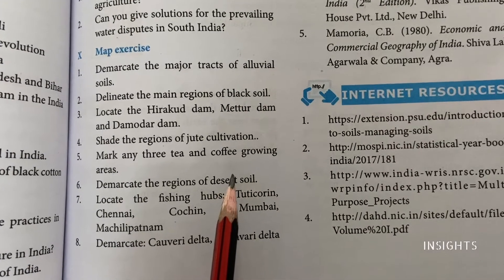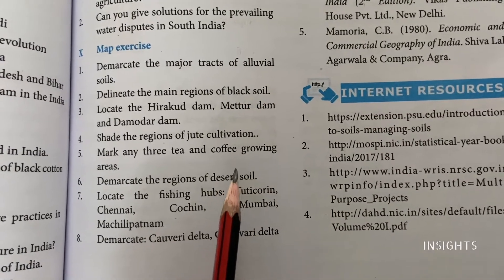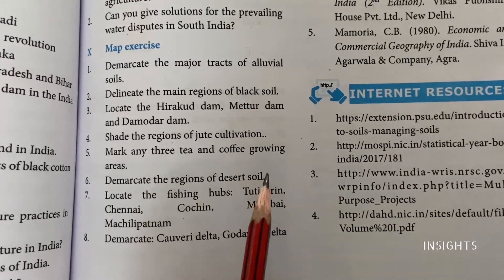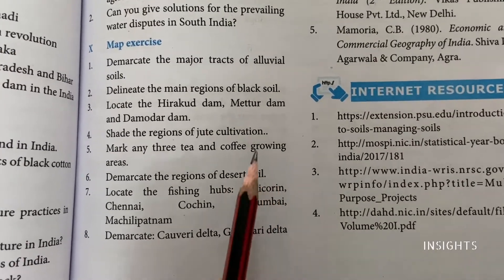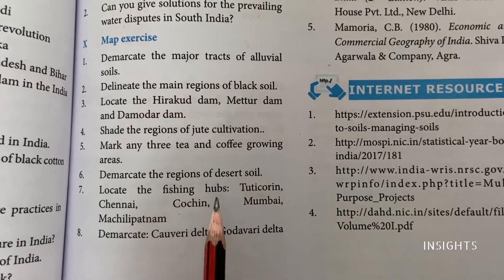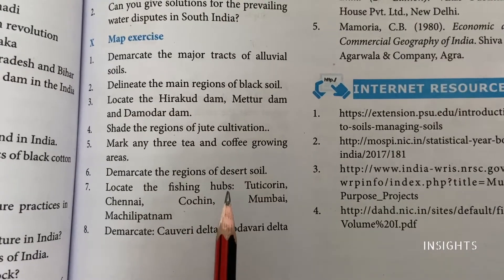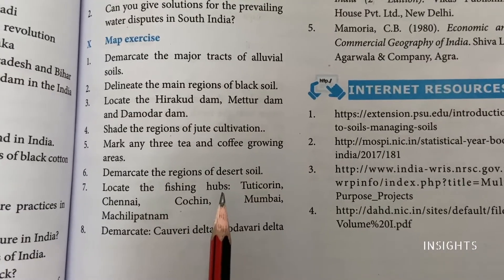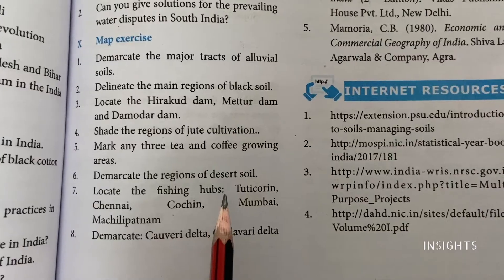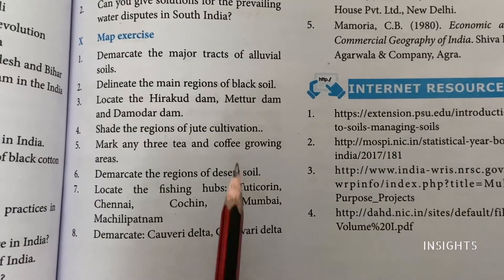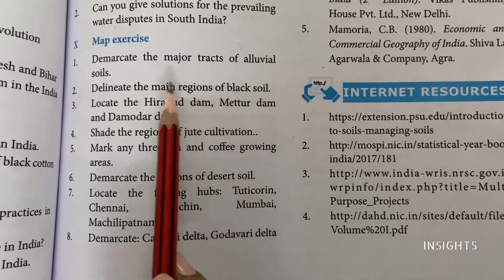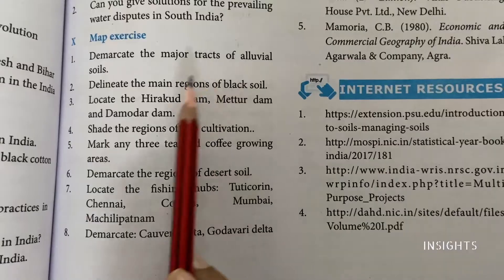Hello, my dear students! How are you all doing? Now let us learn the map for geography lesson 3. There are a variety of things they have asked, so let's try and combine a few things in one map. We'll do two or three maps to make everything clear. Let's get started with the first question: demarcate the major tracks of alluvial soil.